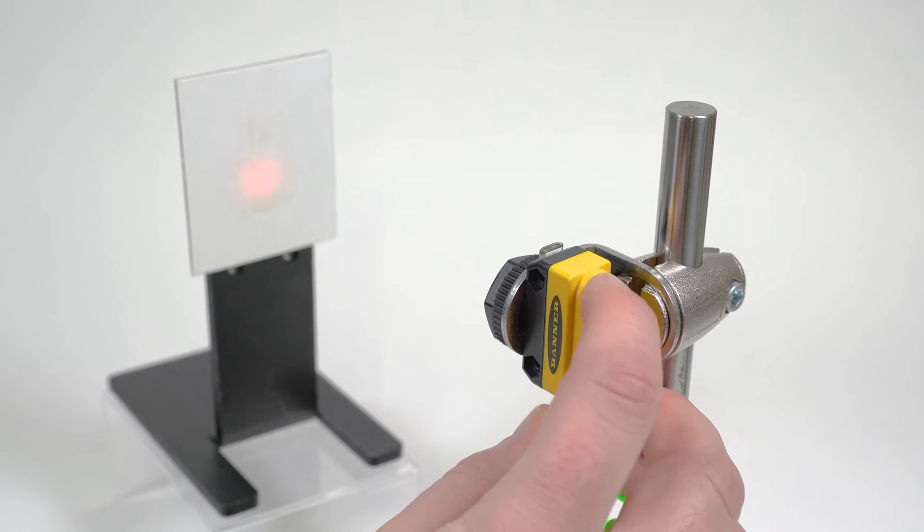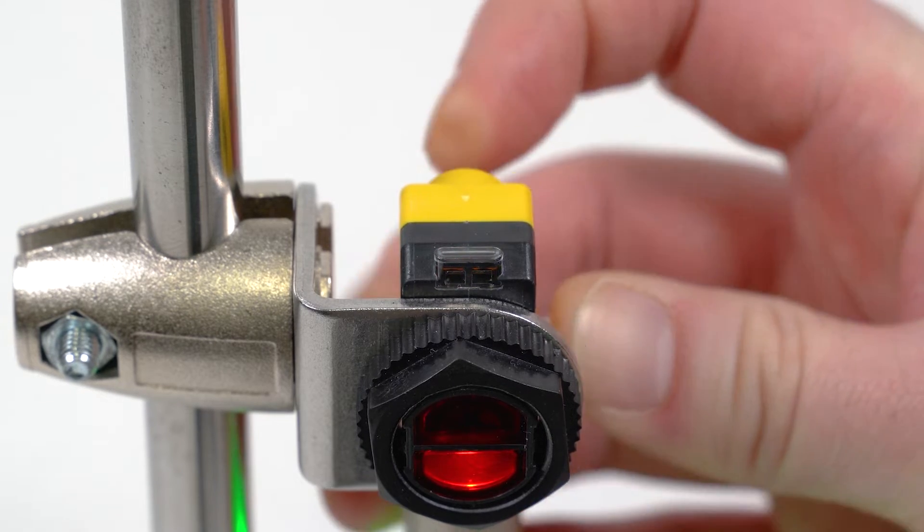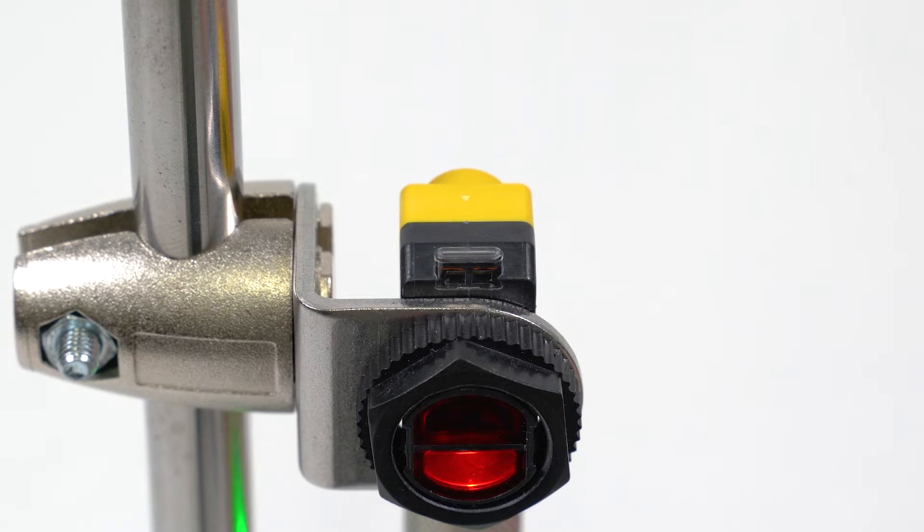To begin, press and hold the push button for two to four seconds until the green power LED turns off and the amber output LED flashes once per second.